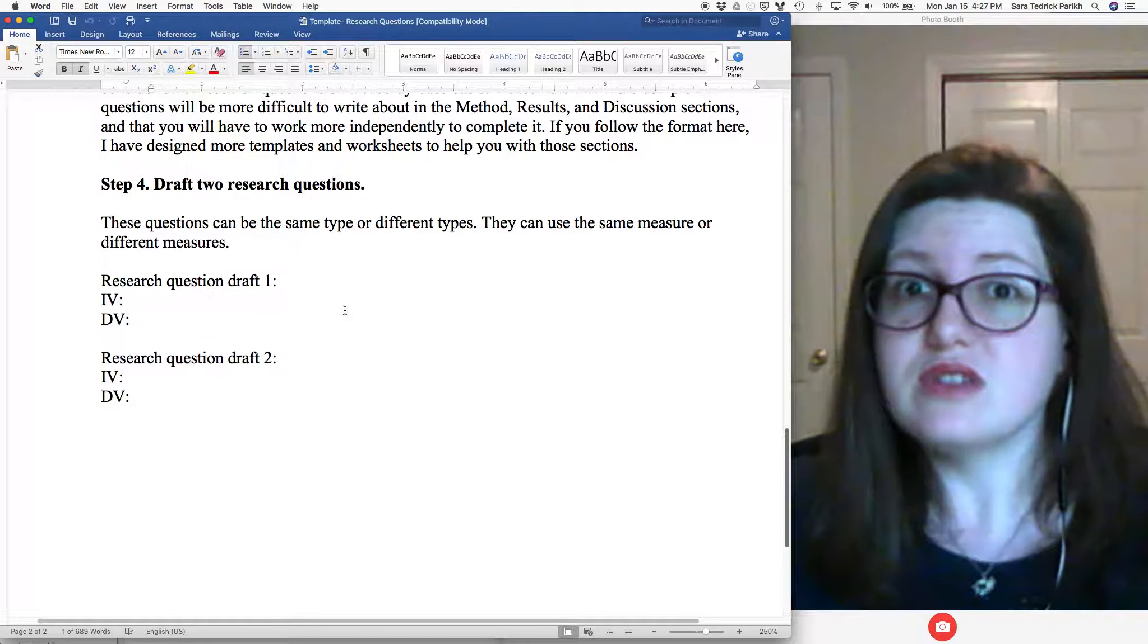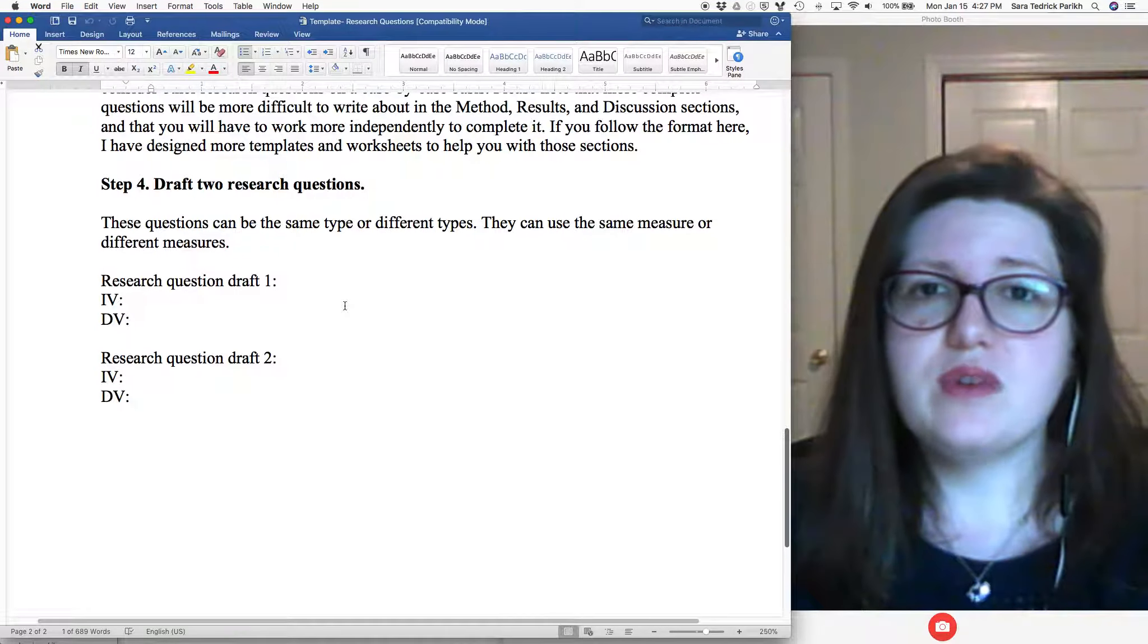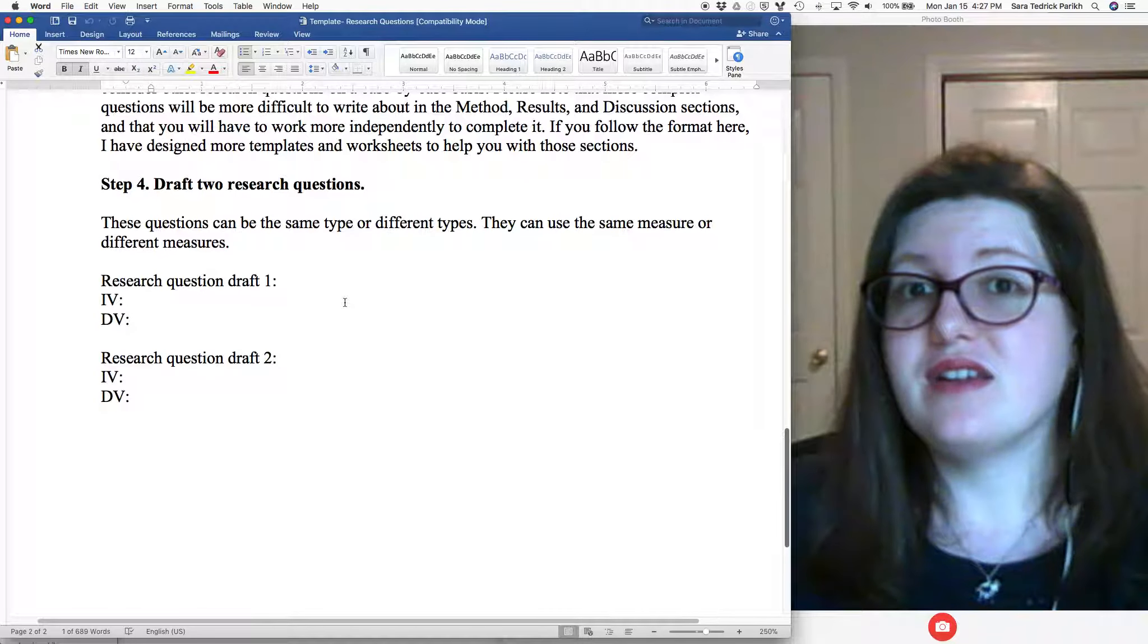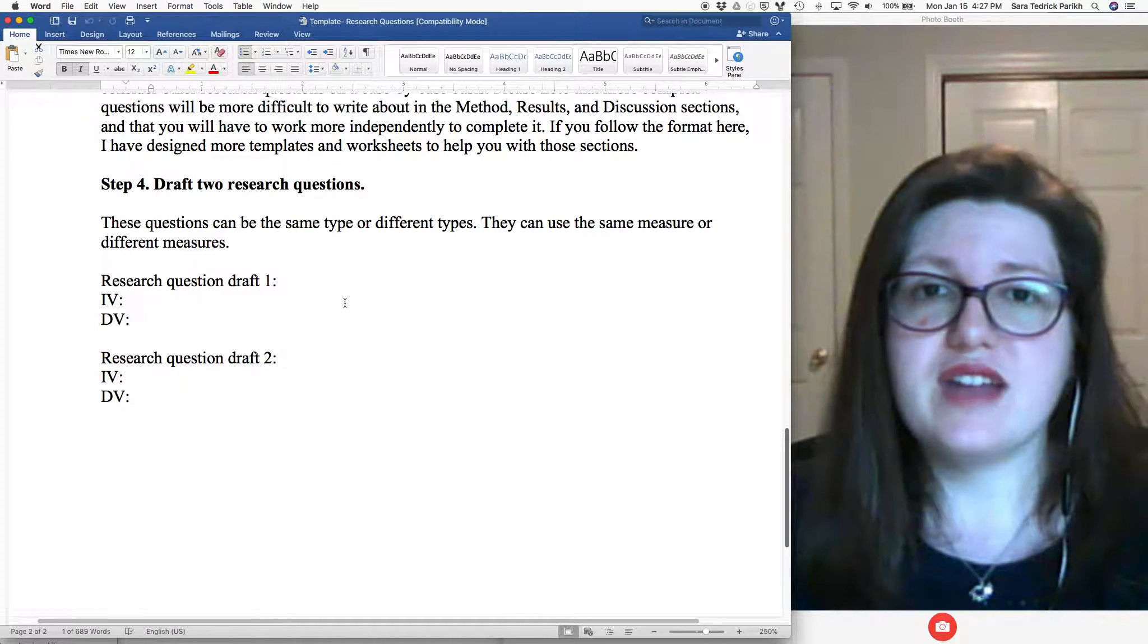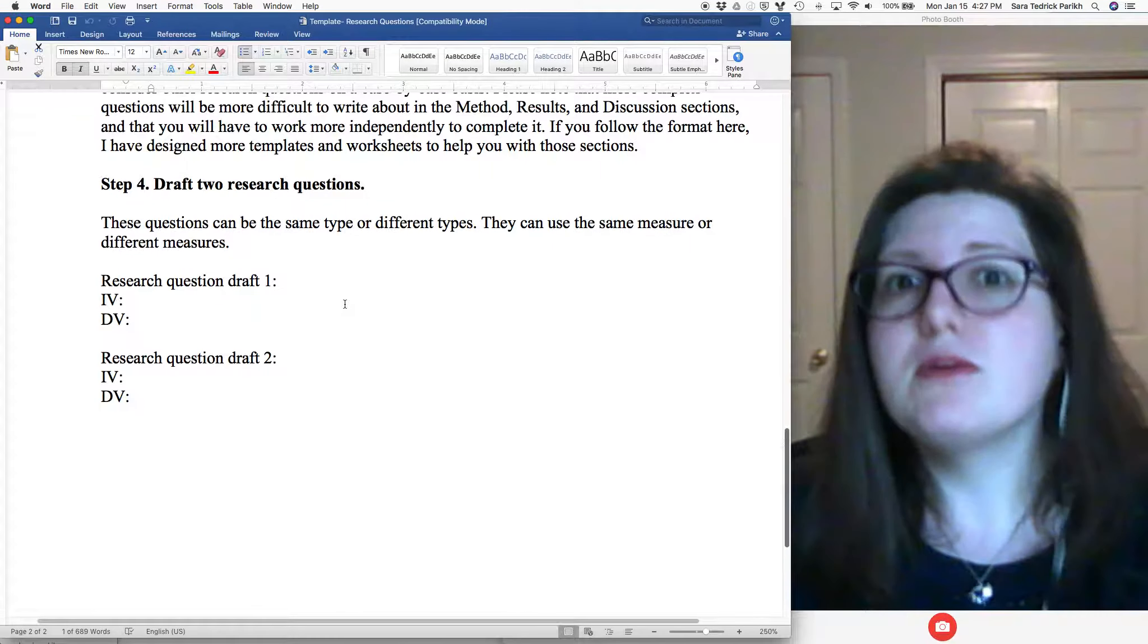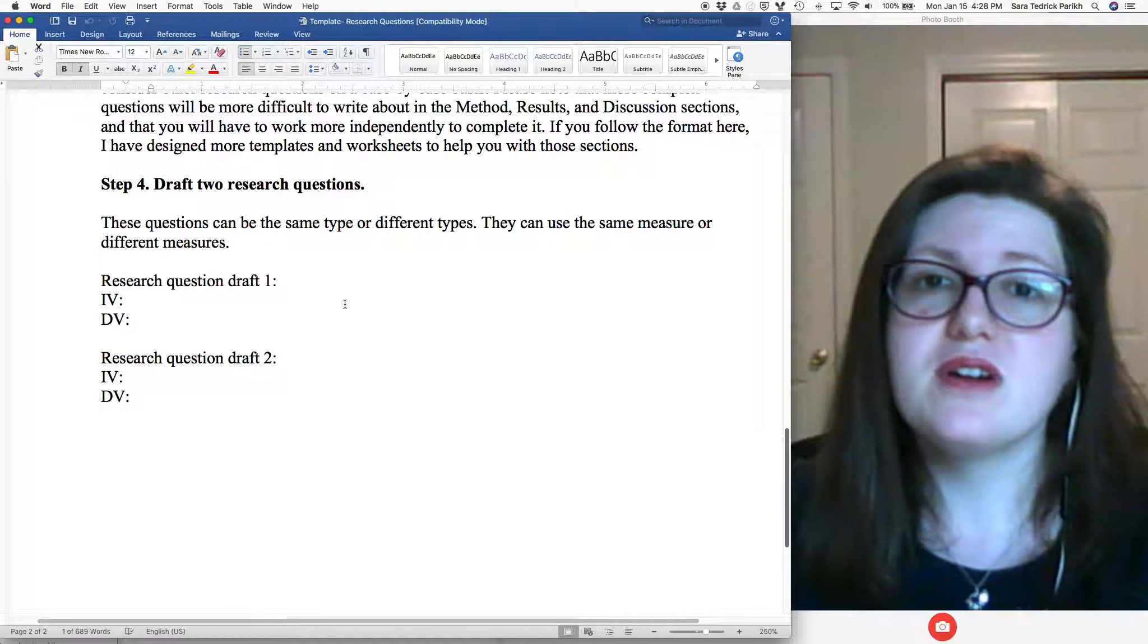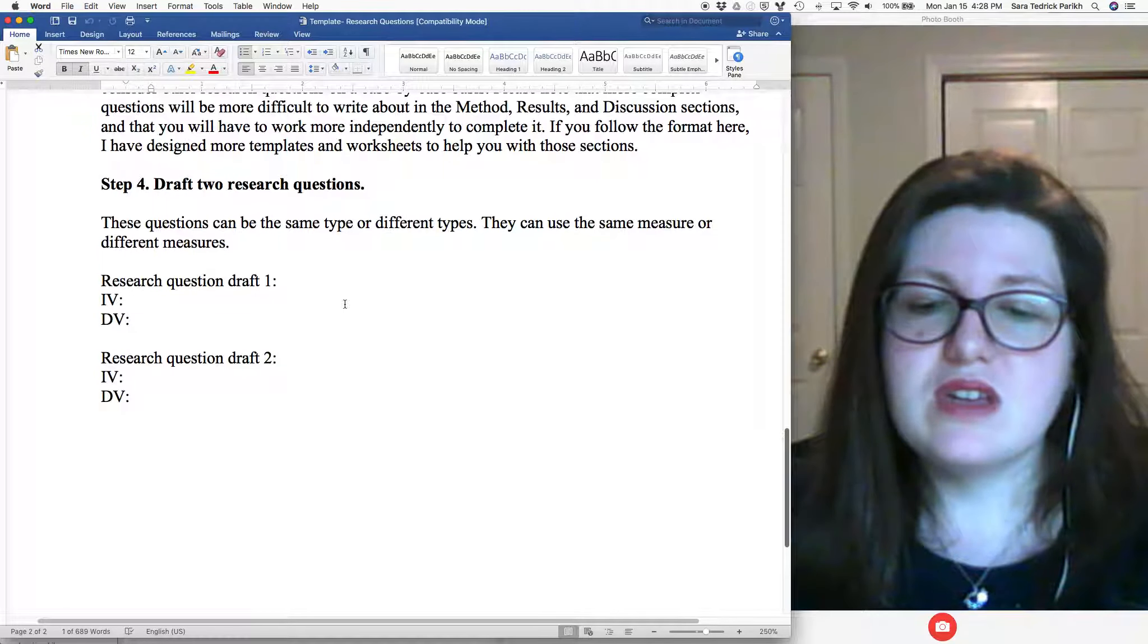And then for this, for the first assignment, you're going to write up two possible research questions. I'm going to give you feedback on both. I might tell you, hey, this one is a lot stronger. I really strongly think you should use this one. But I'll tell you which one to go with. And then you kind of get your choice of which one, but know that I really need to be happy with it by the time you're done.